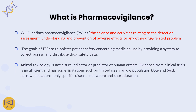Animal toxicology used in preclinical trials is not a sure-shot predictor of human effects, since the human system can react differently. Evidence from clinical trials is also insufficient due to limitations such as limited sample size, narrow population in terms of age and sex, narrow disease-specific indications, and short trial durations. Understanding the full safety profile of a drug requires long-term study, and that is where pharmacovigilance comes in — it is a long-term, continuous effort to ensure drug safety.